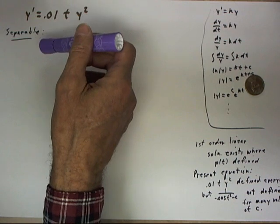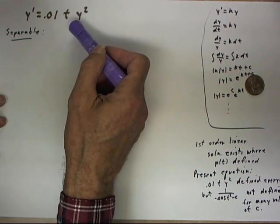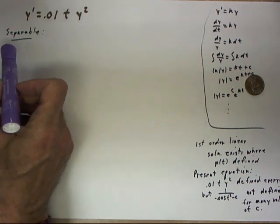Let's consider the equation y prime equals .01t times y squared. Now this equation is what we call separable, and I'm going to explain what that means.